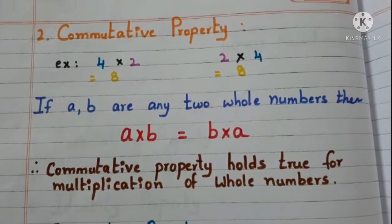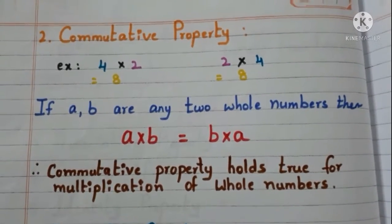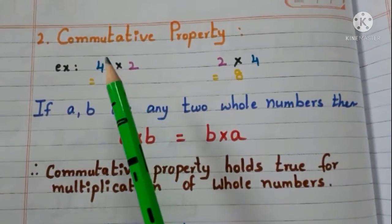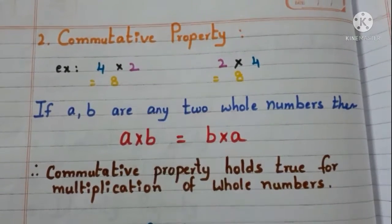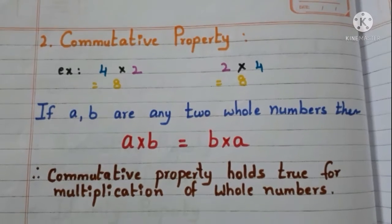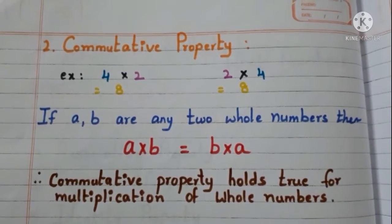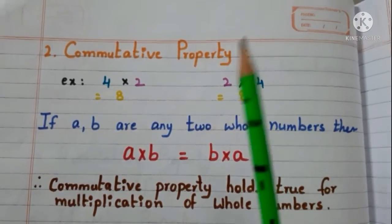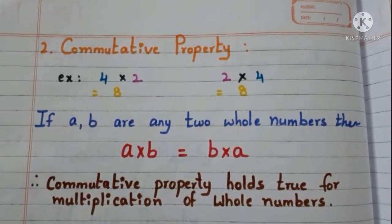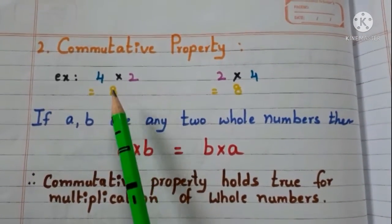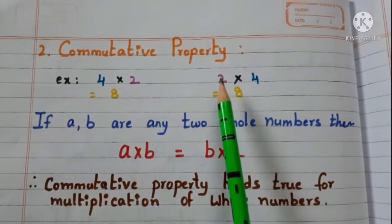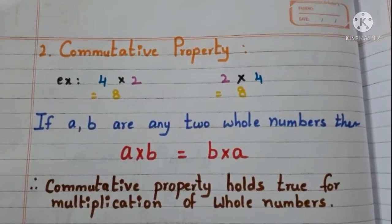Now, commutative property. Let us see with the example. Take 2 whole numbers 4 and 2 and multiply them. 4 times 2 are 8. Now, change the order and multiply: 2 into 4. 2 times 4 are 8. See here, we are getting the same result even though we change the order of numbers.